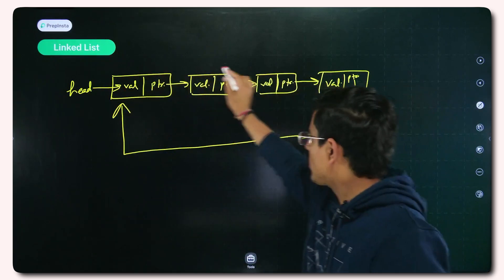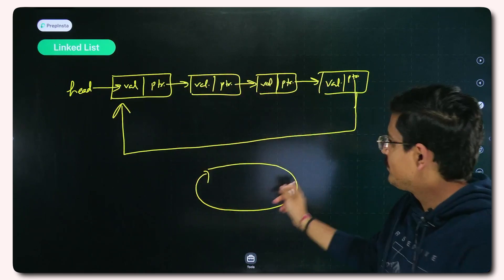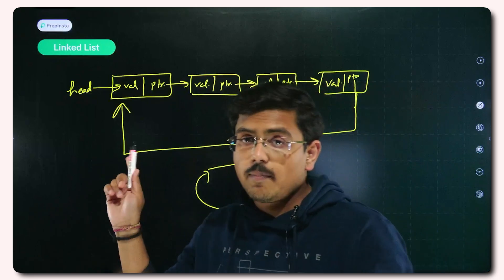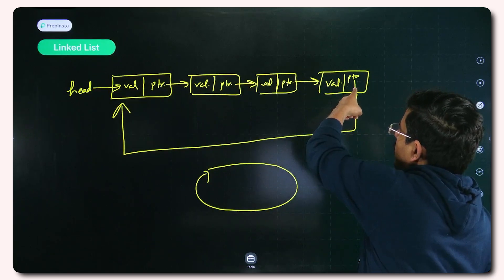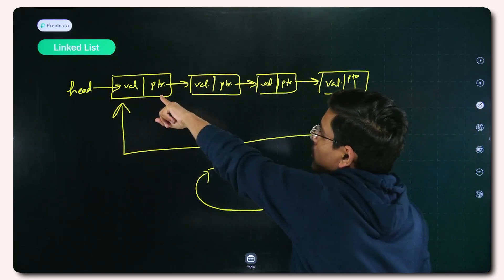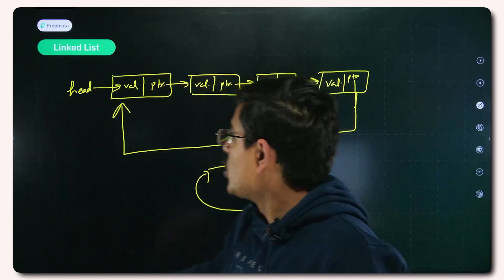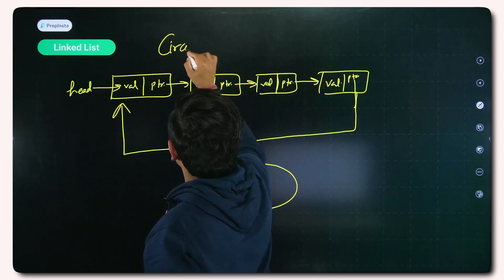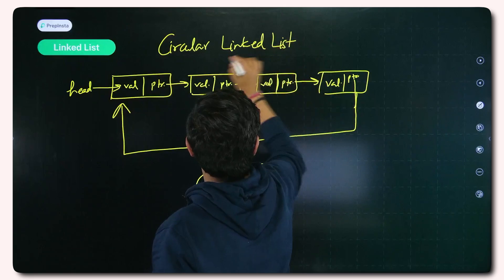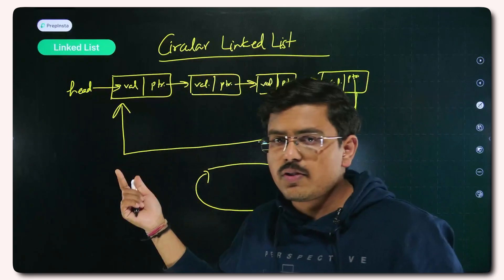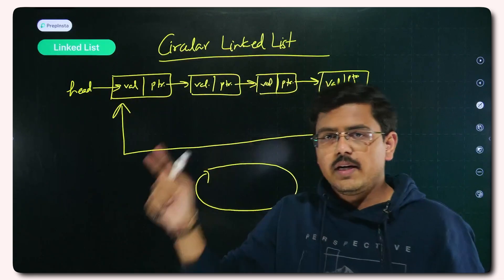In a circular linked list, you can start over again. Backtracking is not available here, but what you can do is from the last node, come back to the first node. The advantage it offers is you can go back from the last node to the first node — that is why it is circular in nature.